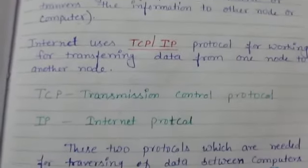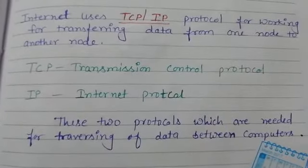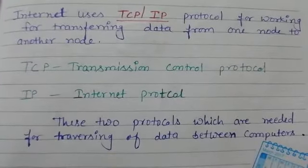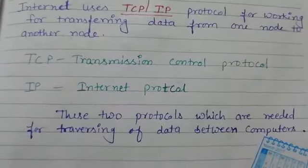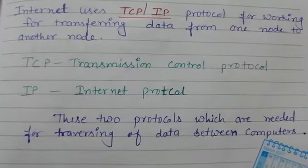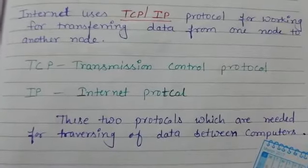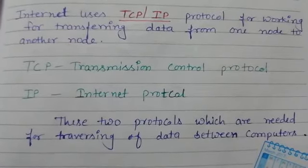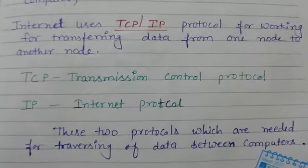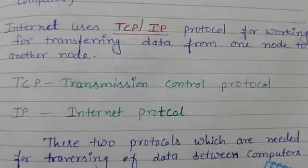Each and every node has its own unique IP address. If it is on my system, it will be a different IP address, and if it is on your system, it will be a different IP address. We will go deeper into this topic when it comes up later. The two protocols used for internet are TCP and IP. Please make notes, learn them, and if you have any queries, please put them in the comments. Bye-bye.